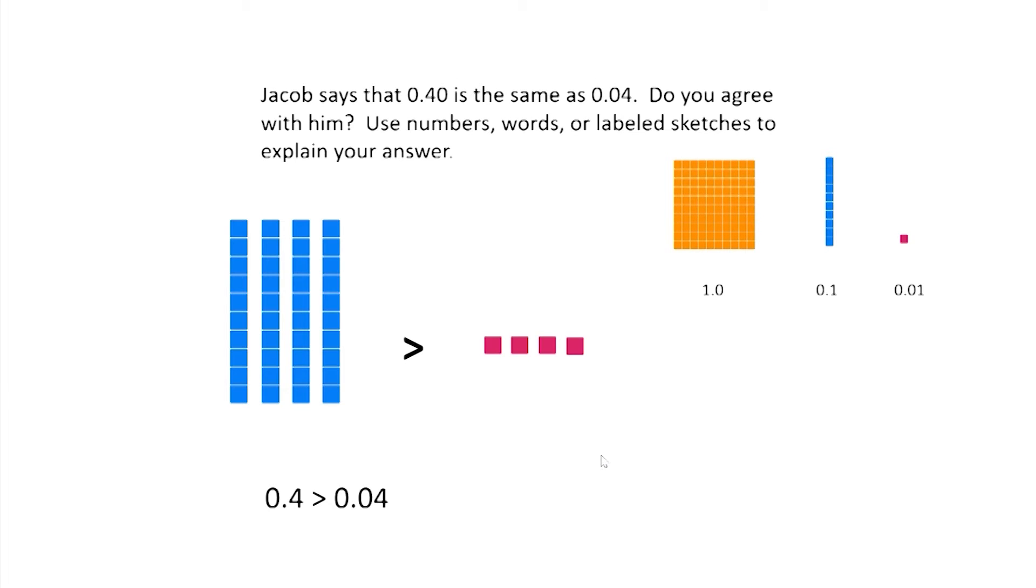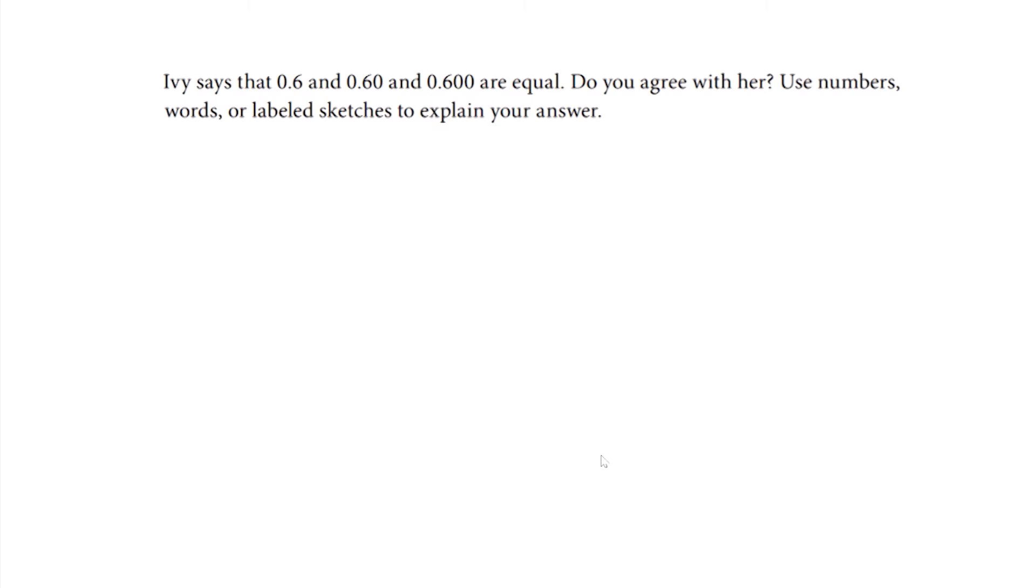Okay, how'd you do? I bet you did awesome. Let's look at another one. Ivy says that six tenths and sixty hundredths and six hundred thousandths are equal. Do you agree with her? Use numbers, words, or labeled sketches to explain your answer. Okay, go ahead and try this one out now.